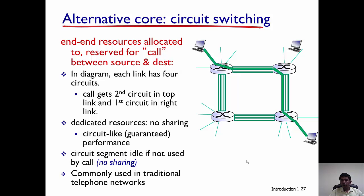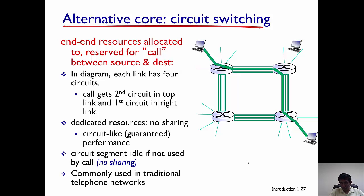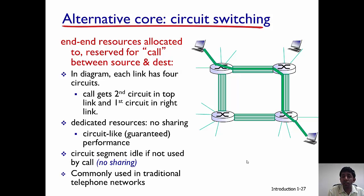In this diagram, each link has four circuits and one circuit on both links has to be reserved for the two hosts to communicate with each other — the two hosts that are diagonally opposite to each other. You can see in the figure that the circuit is marked in deep green.